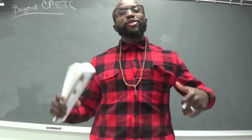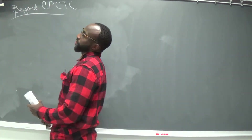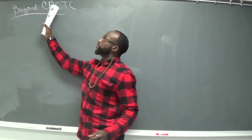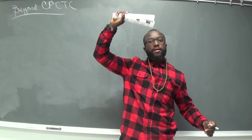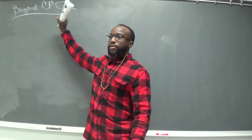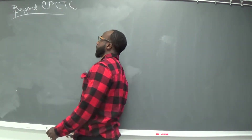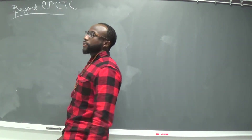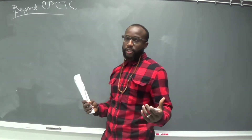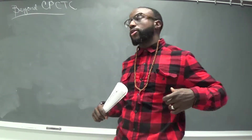How you doing everybody? It's Mr. DoodleMath here and today we're going to talk about proofs — proofs beyond CPCTC. CPCTC means corresponding parts of congruent triangles are congruent. In order to get there, we had to prove that triangles are first congruent and then we look at the corresponding parts of those already equal triangles.